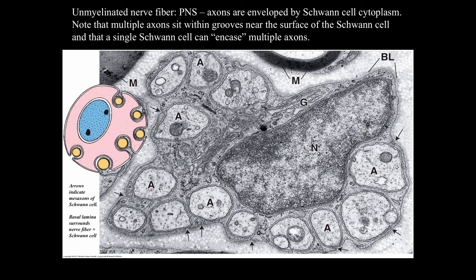Schwann cells also support unmyelinated axons. Axons in the peripheral nervous system are enveloped by Schwann cells even if they're unmyelinated. The cartoon shows six axons enveloped by the Schwann cell but without a lot of myelin wrapping. In the electron micrograph, unmyelinated axons are enveloped and supported by a Schwann cell, with arrows pointing out the mesaxons. There's also a myelinated axon profile shown, and you can see the basal lamina surrounding the entire unit of Schwann cells with the axons.